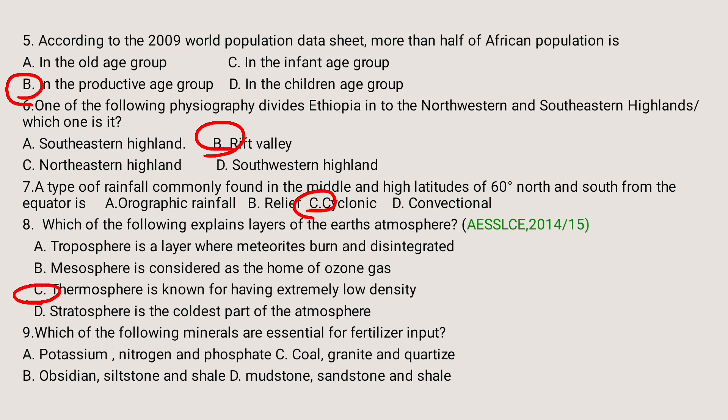Question number nine: Which of the following minerals are essential for fertilizer inputs? A) Potassium, nitrogen, and phosphate. B) Obsidian, siltstone, and shell. C) Coal, granite, and quartz. D) Mudstone, sandstone, and shell. The correct answer is A — potassium, nitrogen, and phosphate are the main ingredients of fertilizer production.